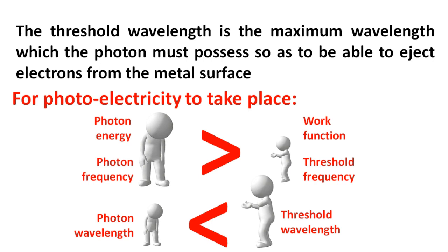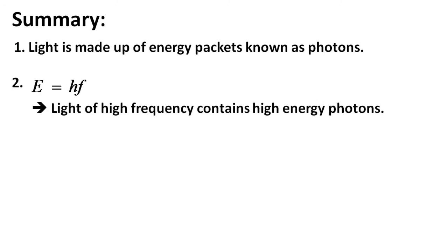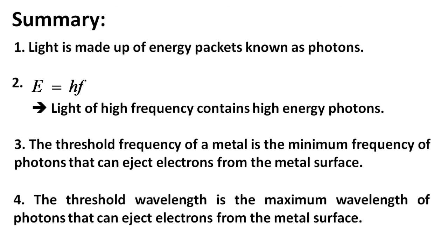Now give us a summary of the entire class before we leave. One, light is made up of energy packets known as photons. Two, E equals hf, so light of high frequency contains high energy photons. Three, the threshold frequency of a metal is the minimum frequency of photons that can eject electrons from the metal surface. And finally, the threshold wavelength is the maximum wavelength of photons that can eject electrons from the metal surface.